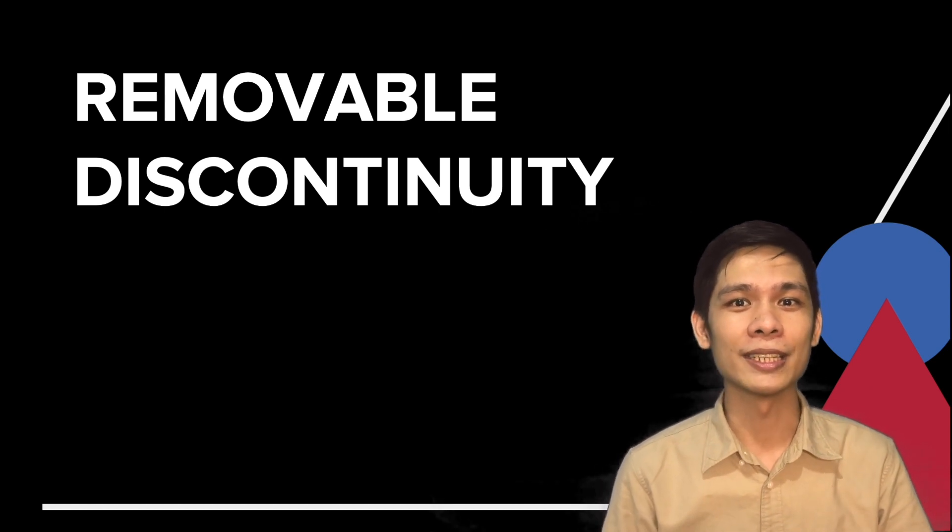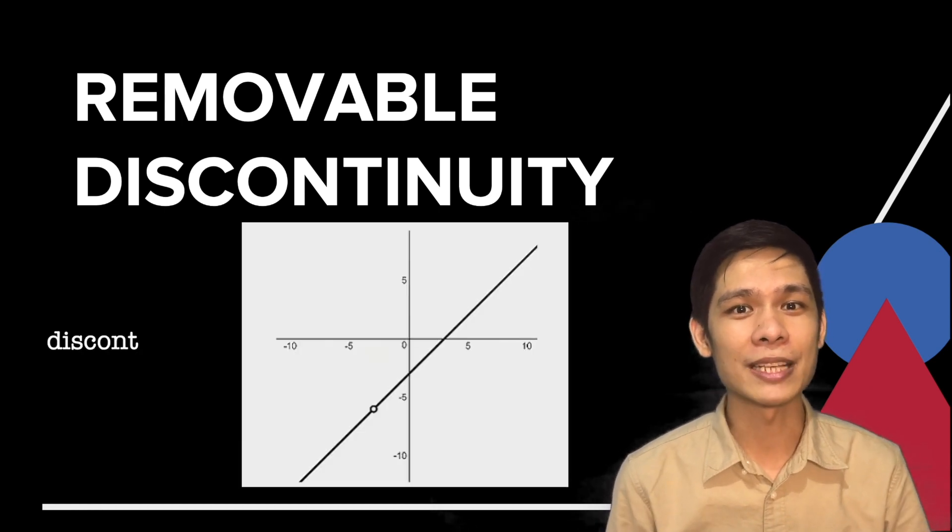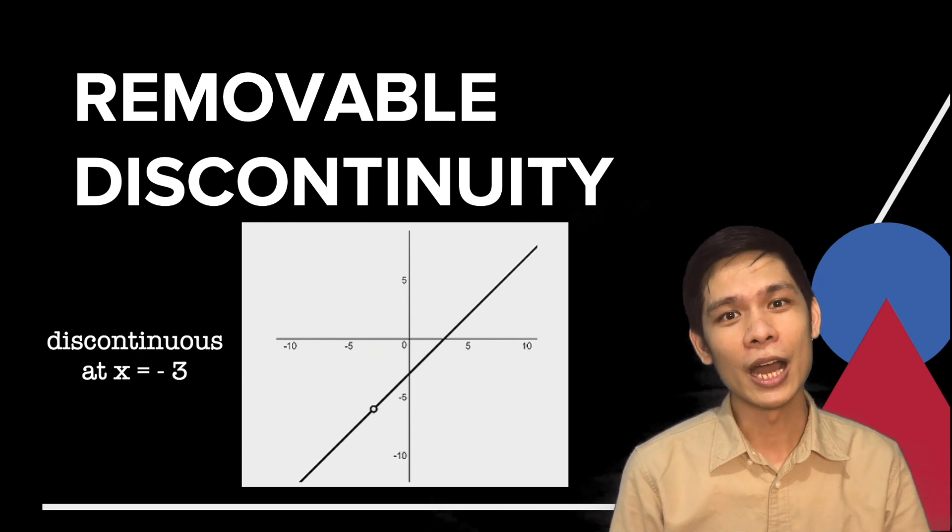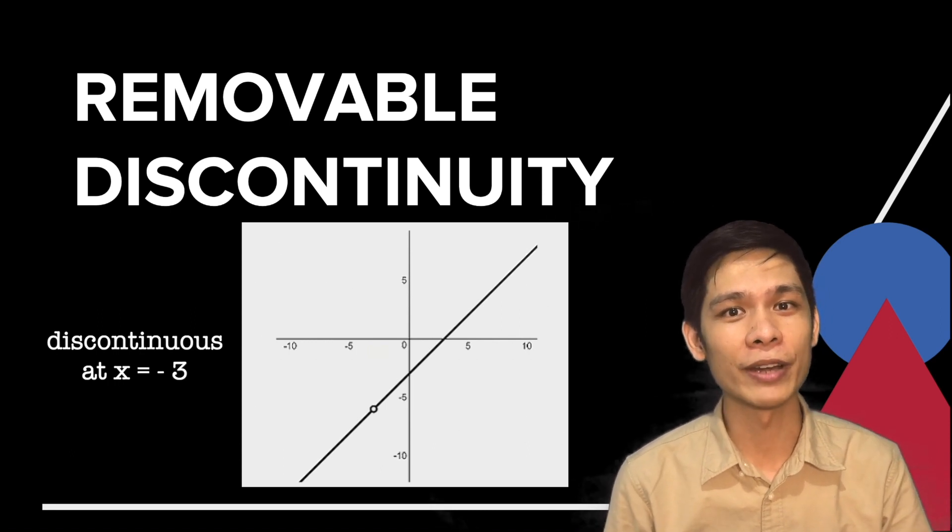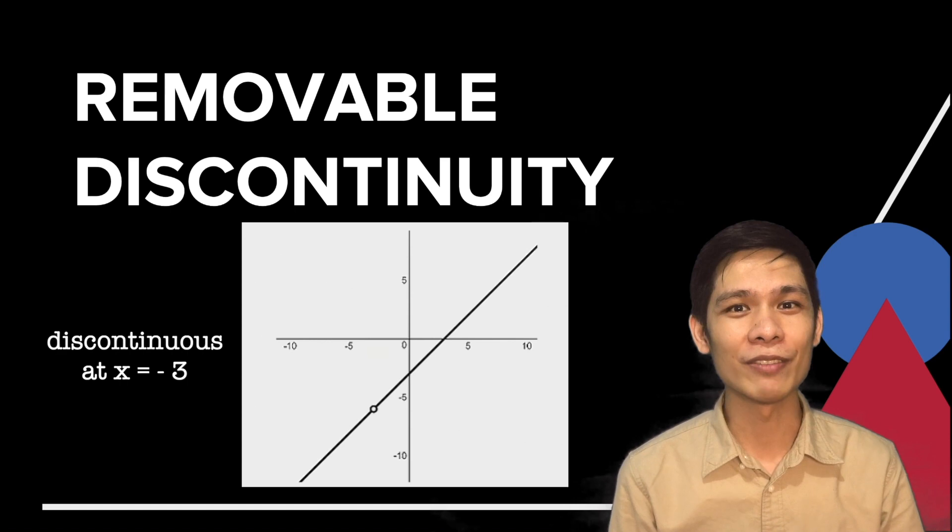A removable discontinuity is characterized by the presence of a hole in the graph of the function. However, this hole can be removed by redefining the function. Let me give you some examples.